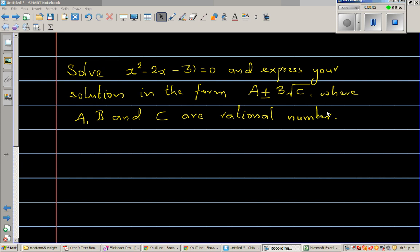Solve x squared minus 2x minus 31 equal to 0 and express your solution in the form a plus or minus b root c where a, b, c are rational numbers.